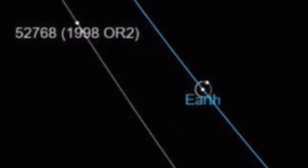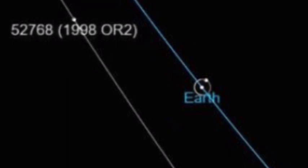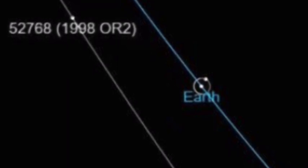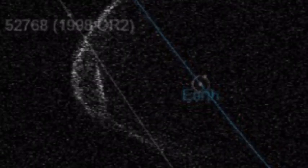Asteroid O2 will be bright enough to be seen through small telescopes. NASA's Asteroid Watch team tweeted: 'Have you been hearing about Asteroid 1998-O2's close approach on April 29th? Rest assured that this asteroid will safely pass Earth by 3.9 million miles (6.2 million kilometers).' Although the space rock will be closest to Earth early on Wednesday, April 29th, you should already be able to spot it, weather permitting.